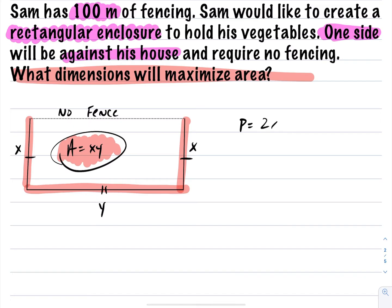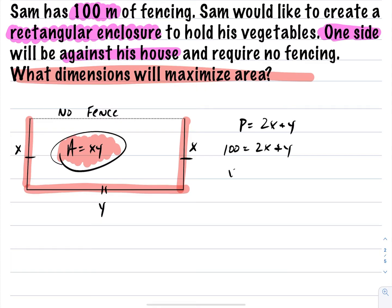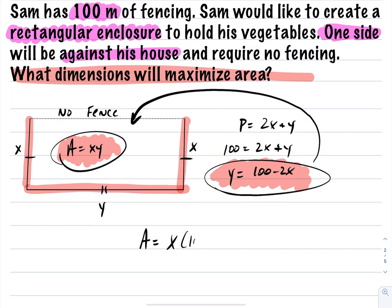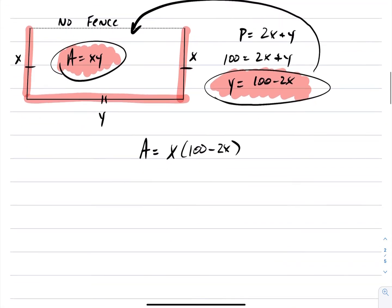The perimeter is different here because we're only using three sides: x plus x plus y, which is 2x plus y. Replacing the perimeter with 100, we have 100 equals 2x plus y. Isolating for y gives y equals 100 minus 2x. Substituting into the area equation gives area equals x times (100 minus 2x).